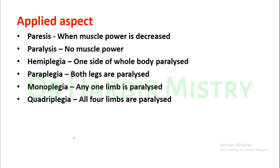Applied aspects of muscle power: Paresis is when muscle power is decreased. Paralysis is when there is no muscle power. Hemiplegia is when one side of the whole body is paralyzed, either right or left. Paraplegia is when both legs are paralyzed. Monoplegia is when any one limb is paralyzed. Quadriplegia is when all four limbs are paralyzed.